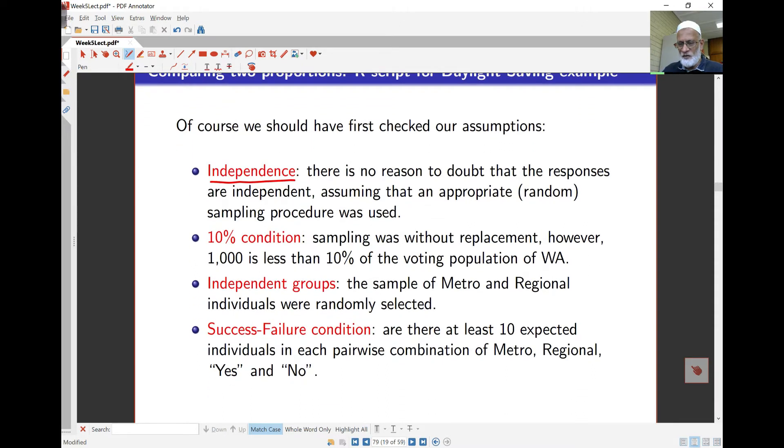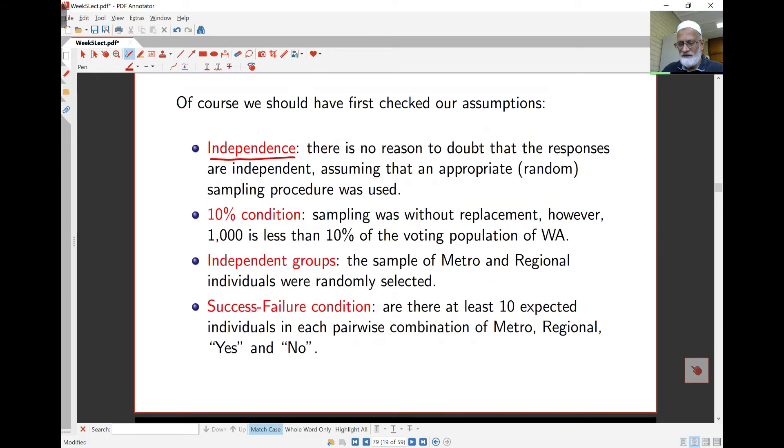Then the metro and the regional groups are independent. Those two populations are independent, and they were, of course, randomly selected independently. And this is the idea that you've got at least enough of success and failure, each of the categories in the particular classes. So we've got at least 10 in metro and 10 in regional over here.